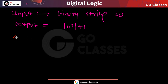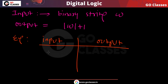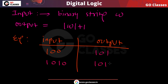For example, if your input is 1 0 0 — which means this is 4 — then the output should be 5, meaning the output should be 1 0 1. Similarly, if your input represents 2 (0 1), then the output should be 3. If your input is 7, then the output should be 8.